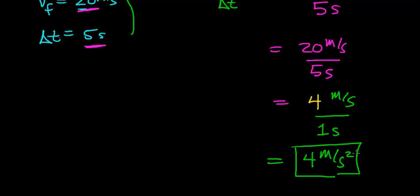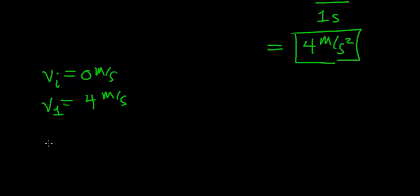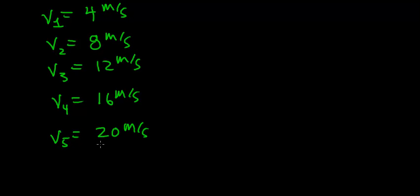This means the velocity changes by 4 meters per second every second. Starting at 0 meters per second, after 1 second the velocity is 4 m/s, after 2 seconds it's 8 m/s, after 3 seconds it's 12 m/s, after 4 seconds it's 16 m/s, and after a total of 5 seconds the velocity reaches 20 meters per second — exactly what the problem stated.